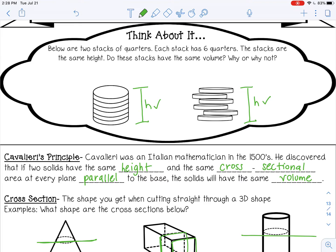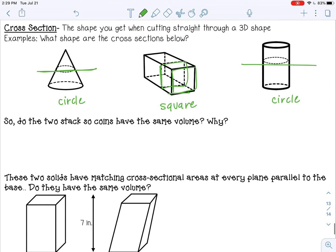Cross-sectional area means basically if we take one coin off the top of each, and these are both quarters, and we looked at the area of those quarters, would they be the same? Well, they're both quarters, so of course the area and the area would be the same. So these would have the same volume. So if you said yes at the beginning, you were right.